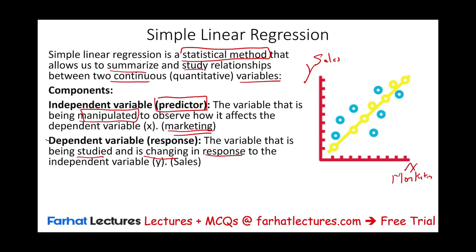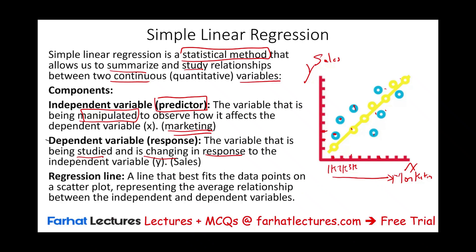The independent variable is marketing. So how is y being manipulated by x? What we see is that as we increase our marketing budget — say 1k, 2k, 3k, 4k, 5k — our sales is going up. So the relationship is a positive relationship. As we increase marketing, overall sales is going up. What we do is draw a line in the middle of all these points. This line has a positive slope — it's going up — which means there is a relationship between marketing and sales.